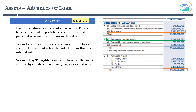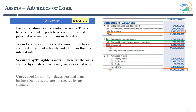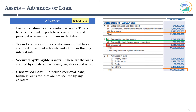The next line item is unsecured loans, which includes personal loans, business loans, and so on. These loans are not secured by any collateral. In the case of default, the entire loan amount would become non-performing assets. When you see a higher percentage of loans classified as unsecured, it's always a good idea to stay away from such banks.